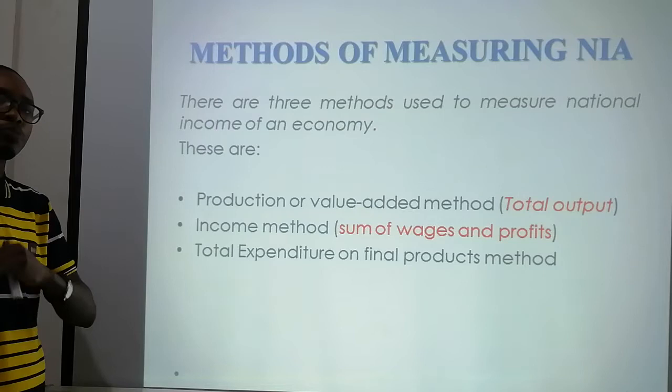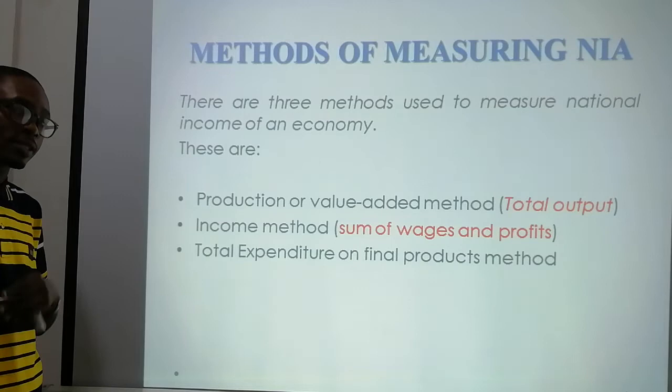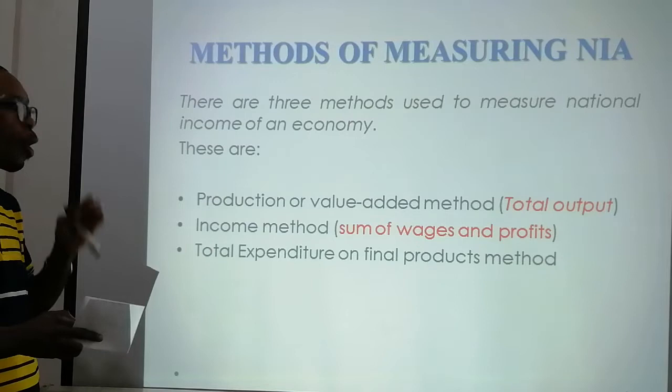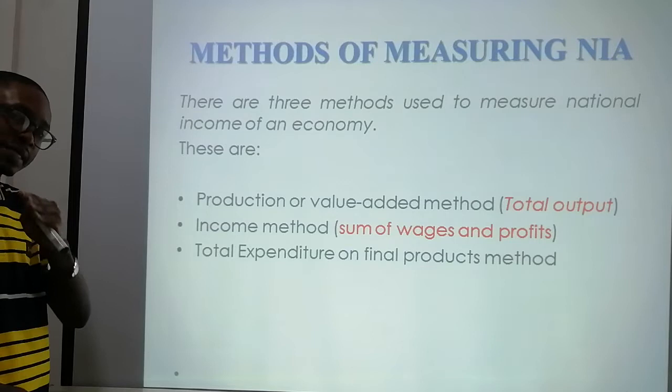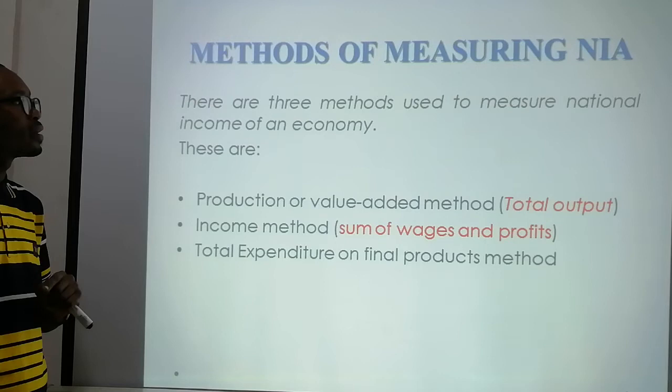The income method is the summation of wages and profits — wages and profits paid to government workers are used to measure the national income in the economy. Also, total expenditure on final goods and services is a third method used to measure national income in accounting.